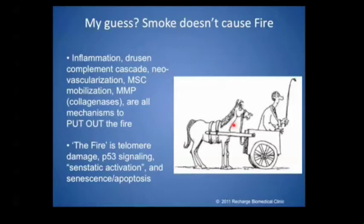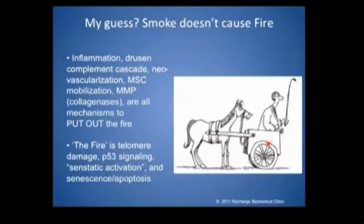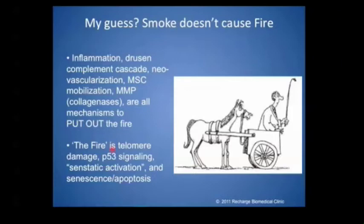Likewise, the metalloproteinases — they're all there to put out the fire. So the smoke doesn't cause the fire. The fire at the heart of all these diseases that we talk about with aging — arthritis, Alzheimer's, which he called arthritis of the brain — it's the telomere damage, which is perfectly natural. The P53 signaling which triggers mitochondrial dysfunction, and sometimes purposefully causes apoptosis or cell death. Senescent activation — which you should go to Podcast 5 and review — and senescence apoptosis, which is not a bad thing; it's part of the way the body clears the bad stuff. And I think that's really what TA65 is doing as a mechanism: it's killing off some of the ones that couldn't be killed off, and then hopefully somebody comes in and repopulates it with a new mesenchymal stem cell.